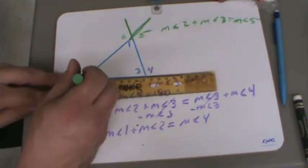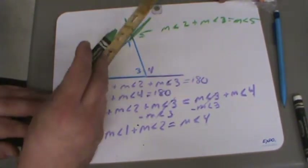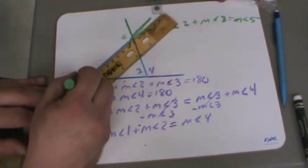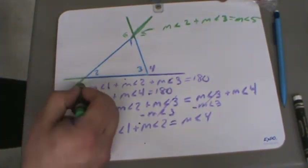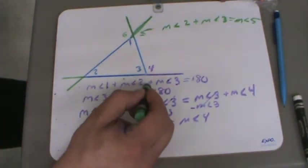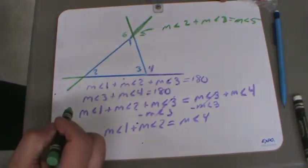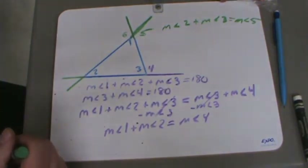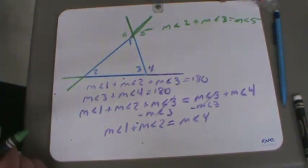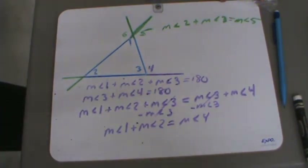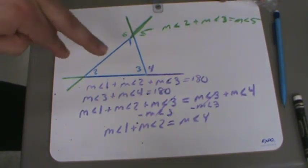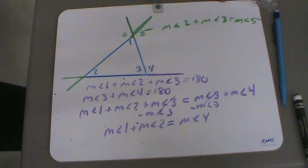And if I extend these lines out here, I get more exterior angles — another one here, another one here. Extending each side gives one here and one here. I have two exterior angles on each of the vertices for a total of 6 exterior angles on every triangle, and all of them can be found by adding the measures of the remote interior angles.